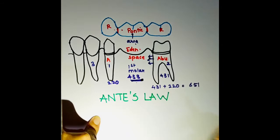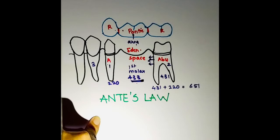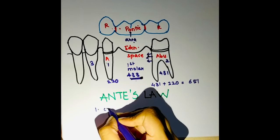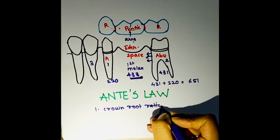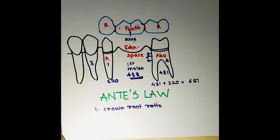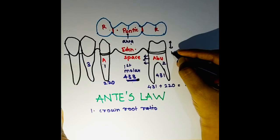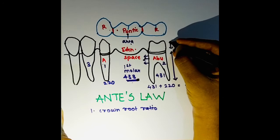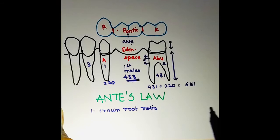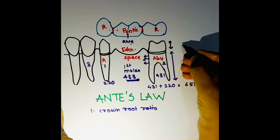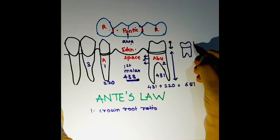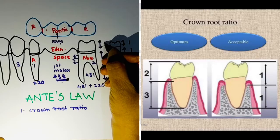There are many factors a dentist should consider along with Ante's Law, and three main considerations were given in 1926. The first one is the crown-root ratio of the abutment. Ideally it should be 1:2 and the optimum is 2:3, meaning the crown should be smaller relative to the root. The length of your root should be more than the length of your crown to give better support. A ratio of 1:1 can be used but the optimum remains 2:3.